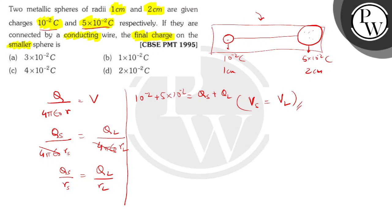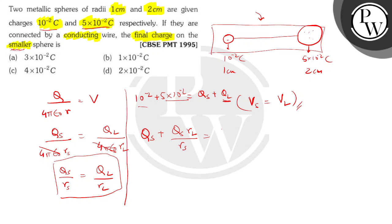To find the final charge on the smaller sphere, we substitute q_large from the earlier equation: q_small plus q_small into r_large divided by r_small equals 6 into 10 power minus 2. Since r_large is 2 centimeter and r_small is 1 centimeter, this simplifies to 3 q_small equals 6 into 10 power minus 2.